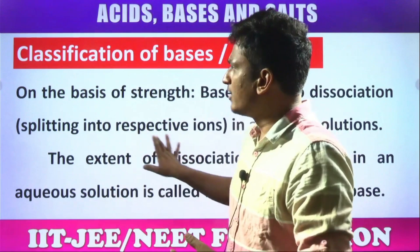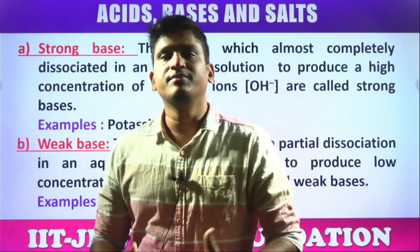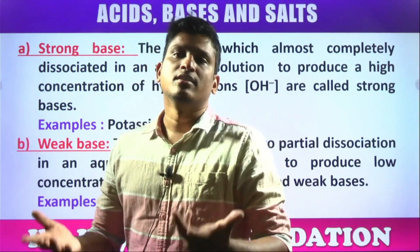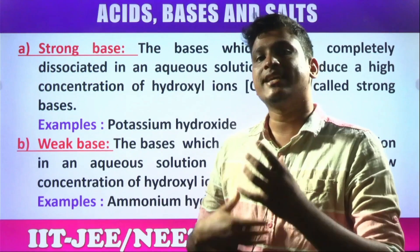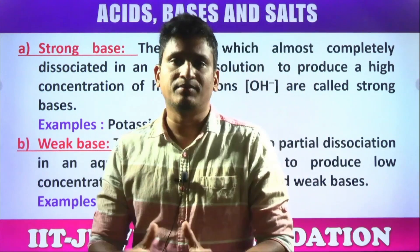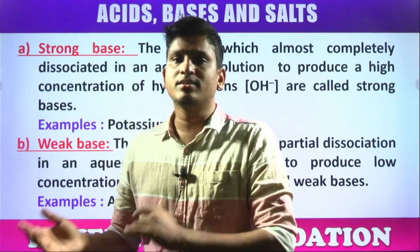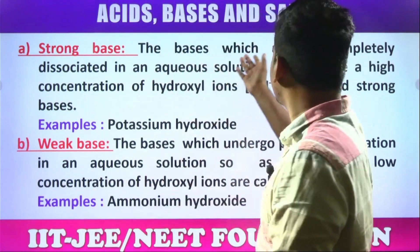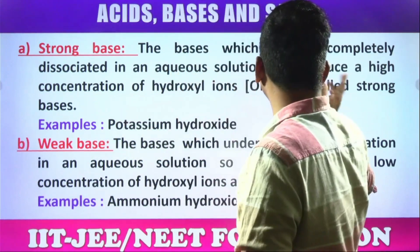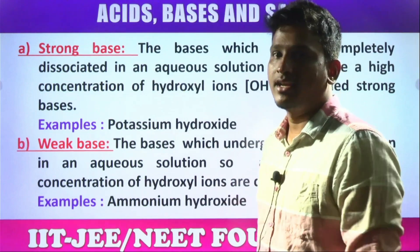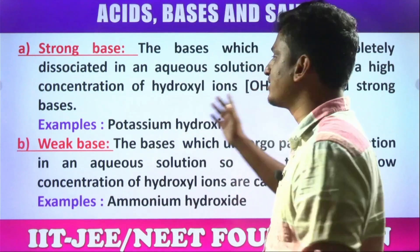We have the same classification: strong base and weak base. A strong base is one which has a capacity to release a maximum number of OH⁻ ions; the extent of ionization is 30% or more than 30%. The bases which are almost completely dissociated in an aqueous solution to produce high concentration of hydroxide ions are called strong bases.